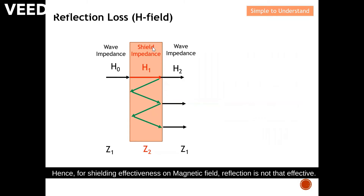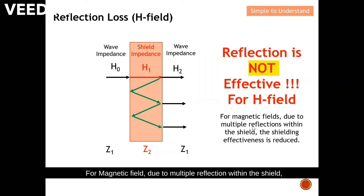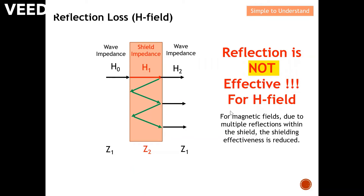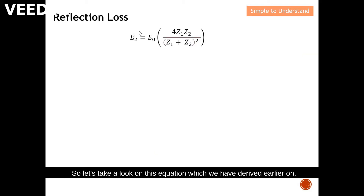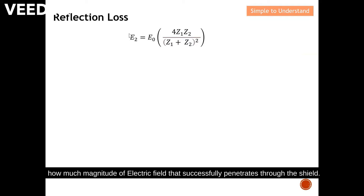Hence, for shielding effectiveness on magnetic field, reflection is not that effective. Due to multiple reflections within the shield, the shielding effectiveness is reduced. Let's look at this equation derived earlier — this is the electric field that successfully penetrates through the shield, relative to the incident wave, showing how much electric field magnitude penetrates through.